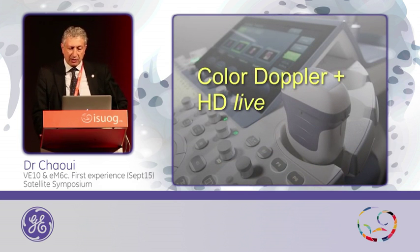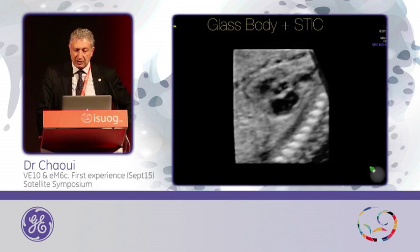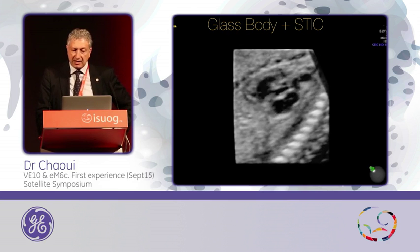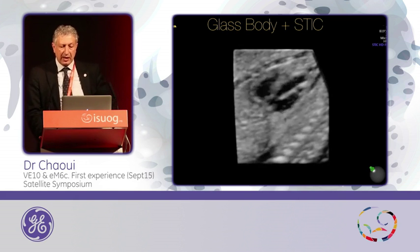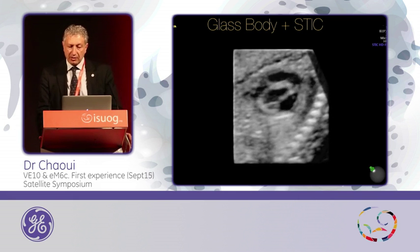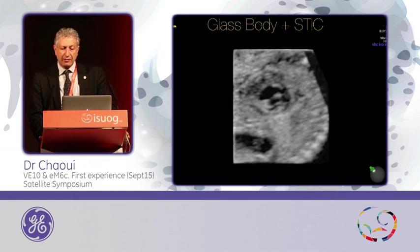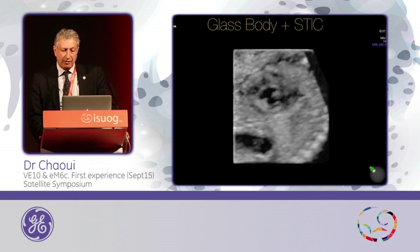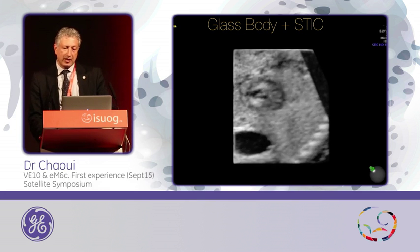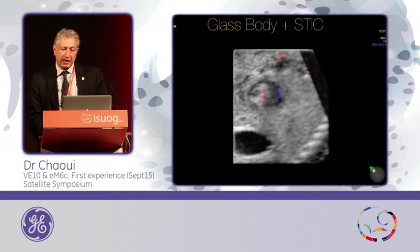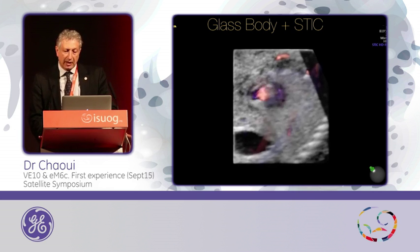My favorite, of course, is going to be, at the end, color Doppler with HDLive. This is an example of an acquisition with the glass body mode using the stick. I decided to look at only the grayscale information, and moving from right to left, you see the mitral valve with the fish mouth sign, and then you see the stomach, and then you can scroll back to the right side — and then you can add the color Doppler.